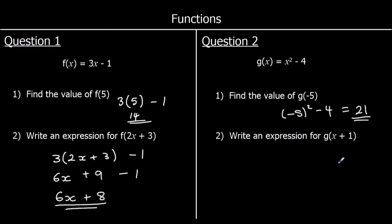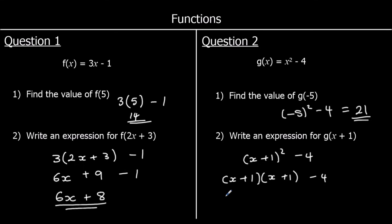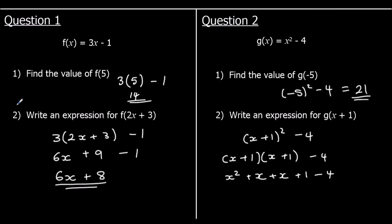Question 2: find an expression for g(x + 1). The input is x plus 1 — change x into x plus 1. So that's (x + 1) squared minus 4. Squared means multiplied by itself, so we've got (x + 1)(x + 1) minus 4. Expand the double brackets: x times x is x squared, 1 times x is x, 1 times x is x, and 1 times 1 is 1. Collect like terms: x squared, x plus x is 2x, and 1 minus 4 is minus 3. So the answer is x squared plus 2x minus 3.